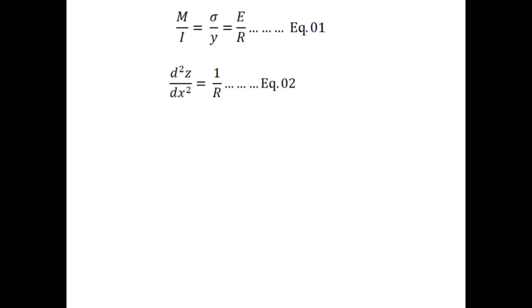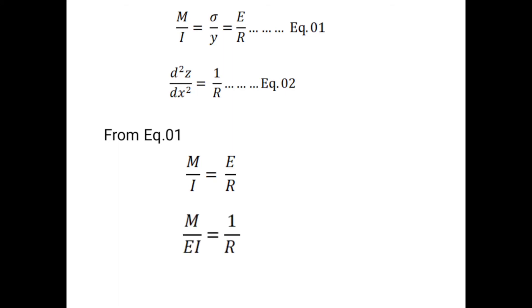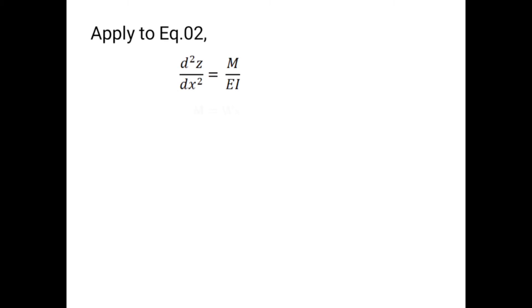Take this as equation 2. By using equation 1, it can be derived that 1 over r equals M over E·I. Applying this to equation 2 gives a combined equation. Here, the bending moment can be replaced by the applied load multiplied by the distance from the origin, obtaining a new equation.